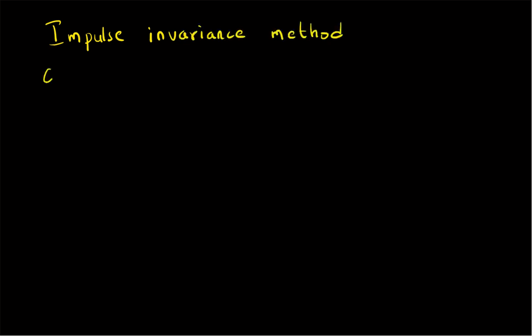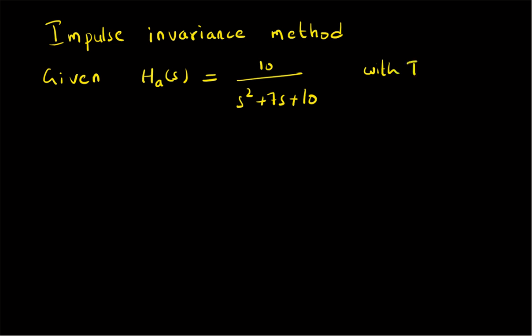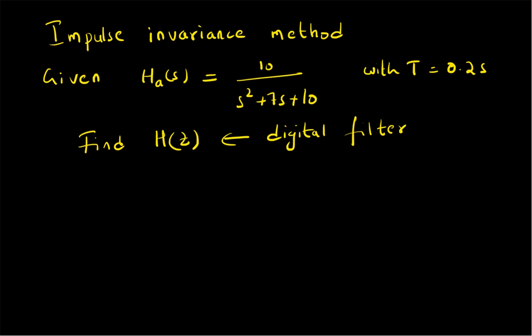We are going to look at the impulse invariance method. The given information is as follows: we are given the system function of an analog IIR filter H_a(s) = 10 / (s² + 7s + 10), with sampling period T = 0.2 seconds. We want to find the system function H(z) in the digital domain, converting this analog filter into a digital filter.